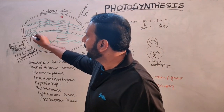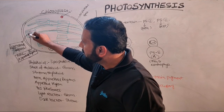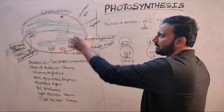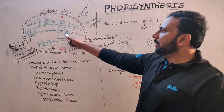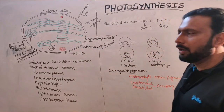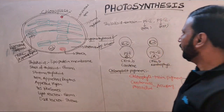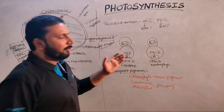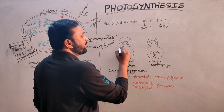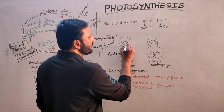Mainly photosystem I is present in non-appressed regions, and mostly photosystem II is present in appressed regions. This is the structure of the chloroplast. Light reactions take place in the grana, mainly on the thylakoid. Here photosystem I and photosystem II are present. In both photosystems, two parts are present: antenna and reaction center.